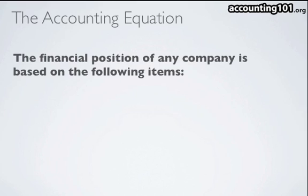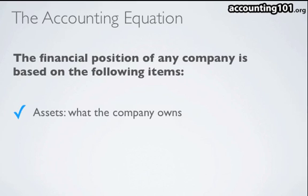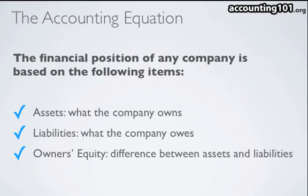The financial position of any company is based on the following items: the assets, or what the company owns; the liabilities, which is what the company owes; and the owner's equity, which is the difference between assets and liabilities.